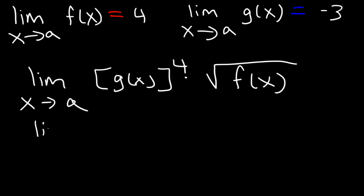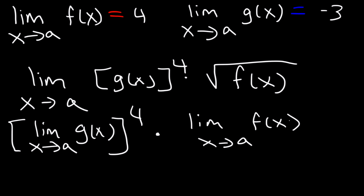So, first, we have the limit as x approaches a of g of x, which is all raised to the 4th power, times the limit as x approaches a of f of x. You can raise it to the 4th power, or take the square root of the entire thing.